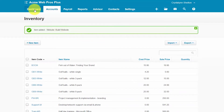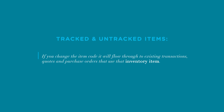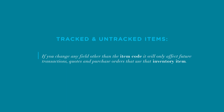While the steps to edit an inventory item are straightforward, there are some restrictions on what can and cannot be changed for both tracked and untracked inventory items. For both tracked and untracked inventory items, if you change the item code, it will flow through to existing transactions, quotes, and purchase orders that use that inventory item. However, if you change any field other than the item code, it will only affect future transactions, quotes, and purchase orders.